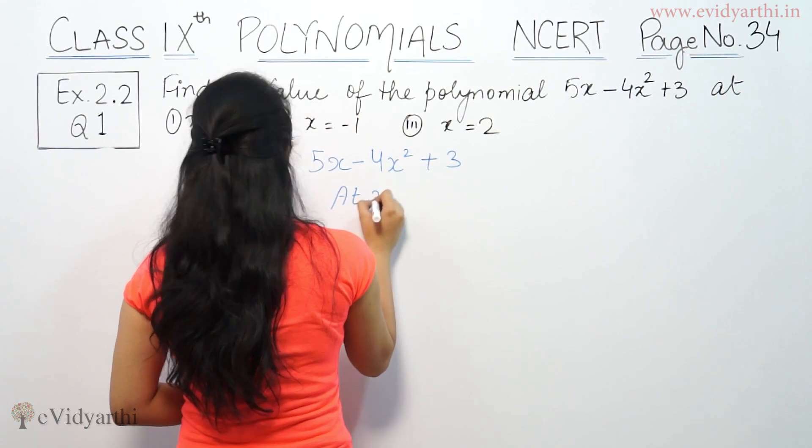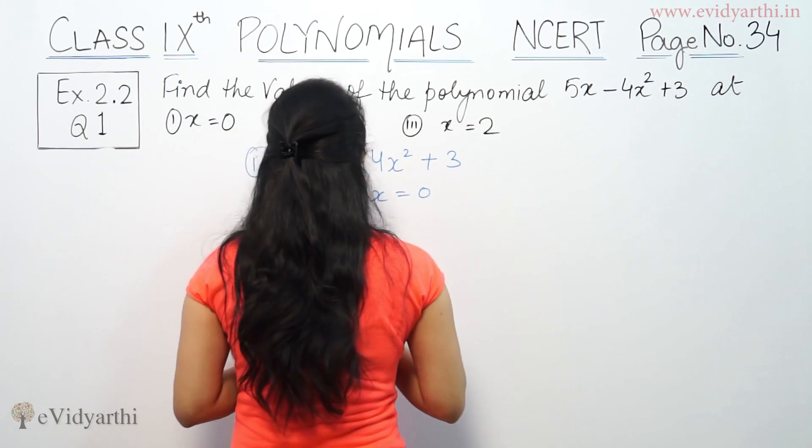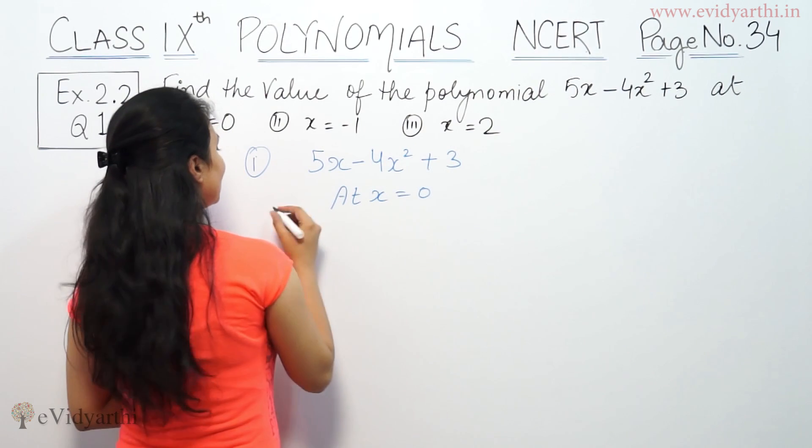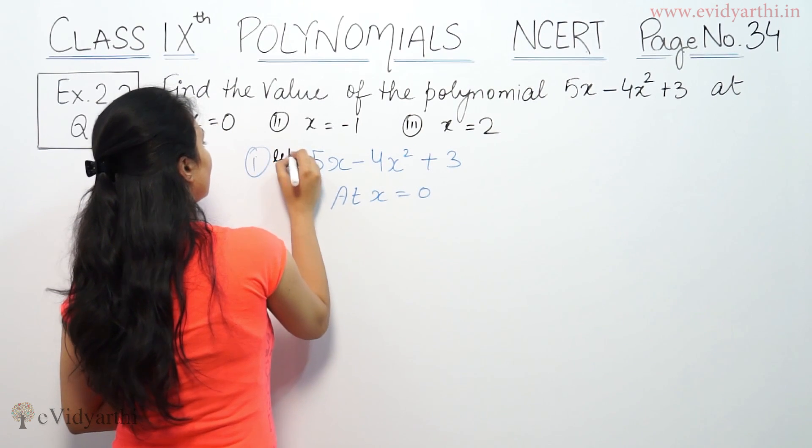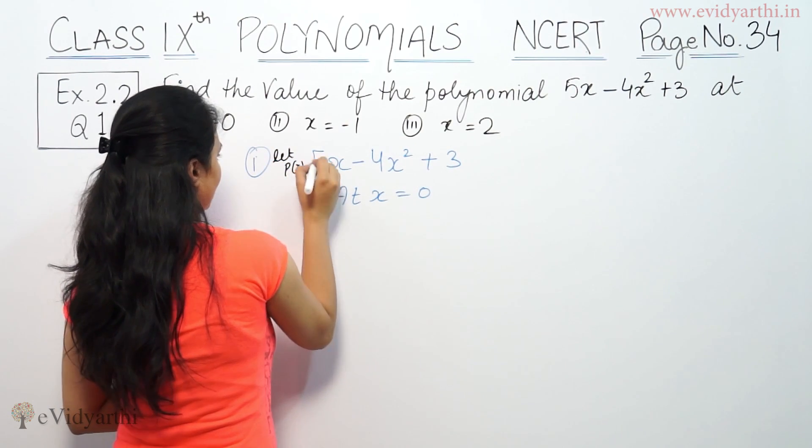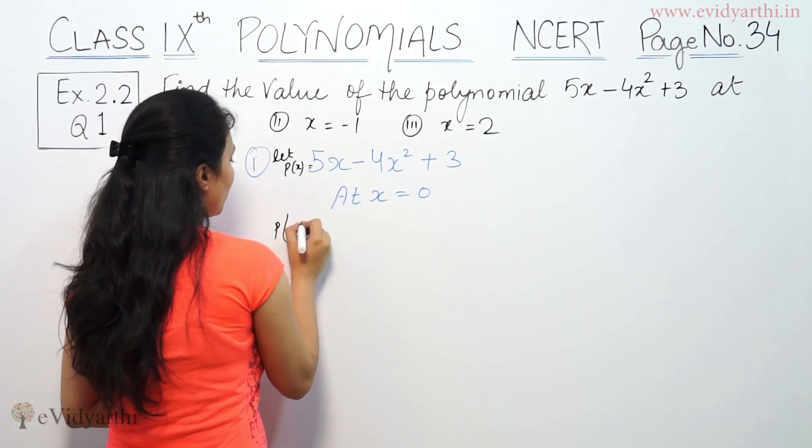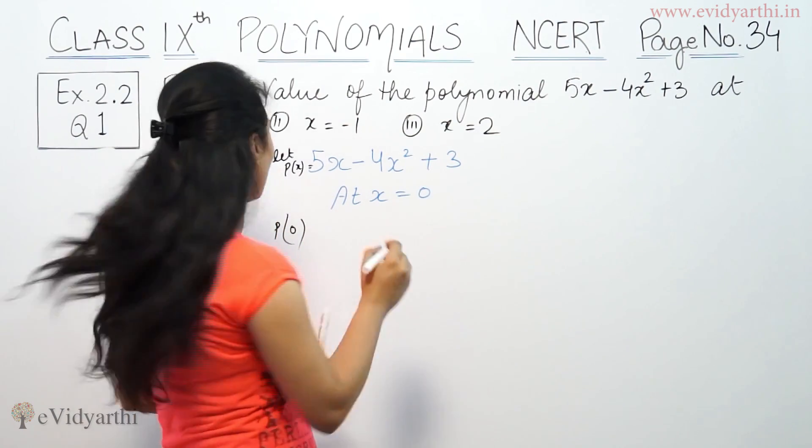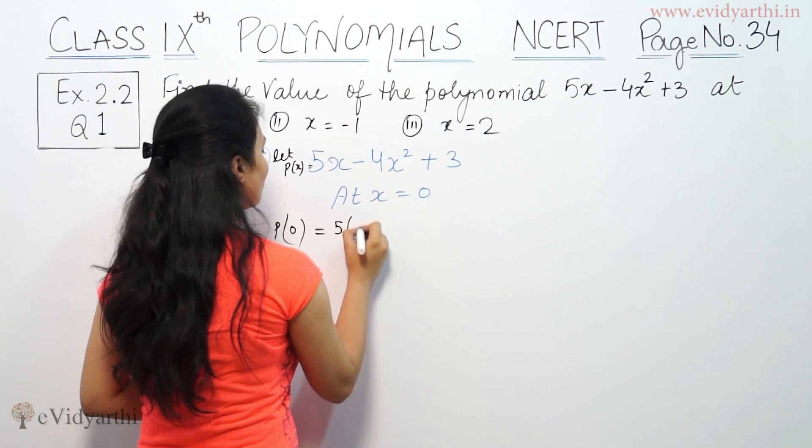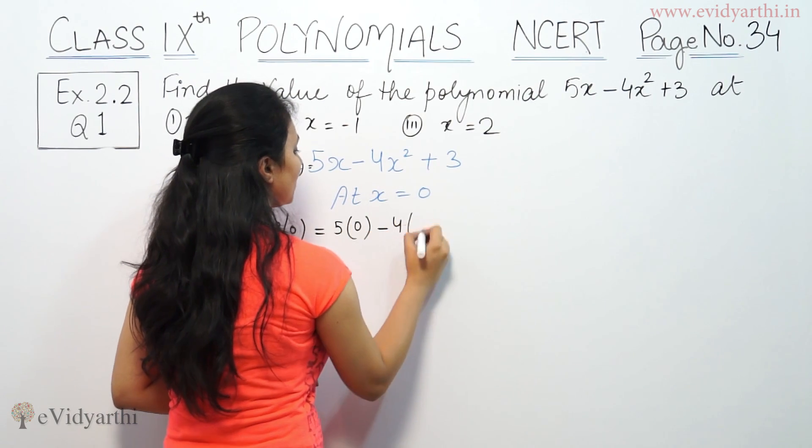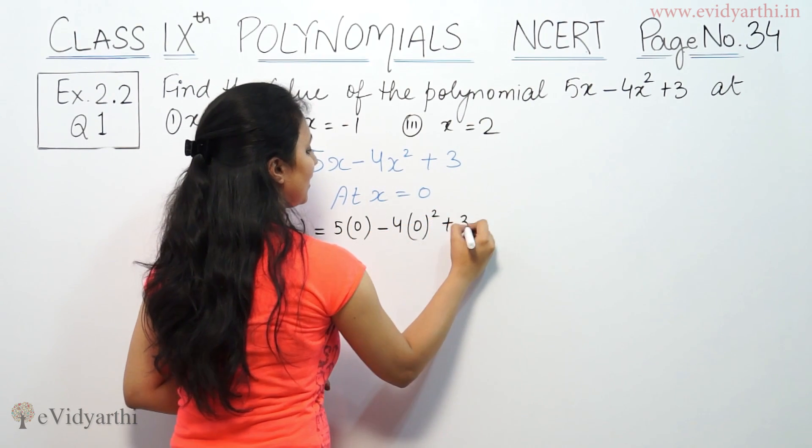First, let's find the value at x equals 0. Let's take the polynomial 5x minus 4x squared plus 3. So this will be 5 times 0 minus 4 times 0 squared plus 3.